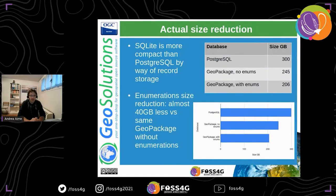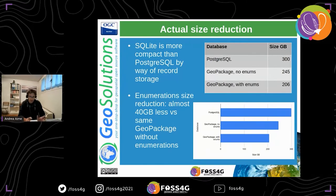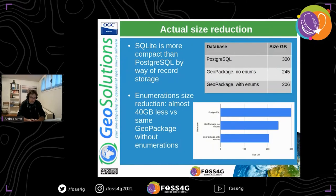The PostgreSQL database was 300 gigabytes. The GeoPackage with no fancy tricks was 245 gigabytes — a significant reduction because PostgreSQL favors speed over disk space while SQLite minimizes space at the cost of speed. When adding the enumerations optimization, we went down to 206 gigabytes — a nice improvement of 40 gigabytes less to transfer and process during queries.